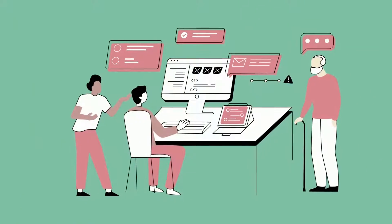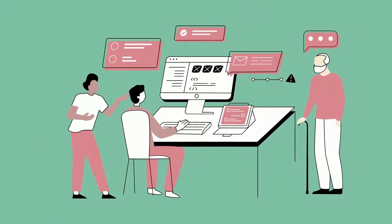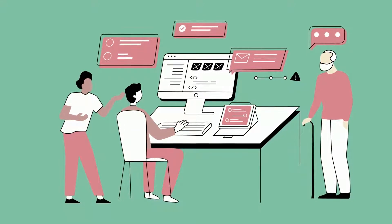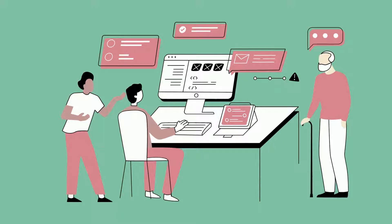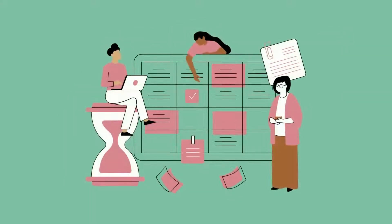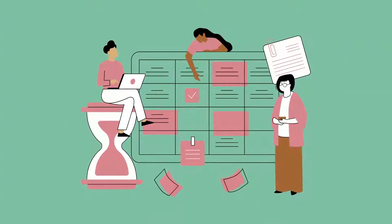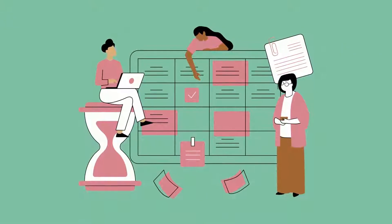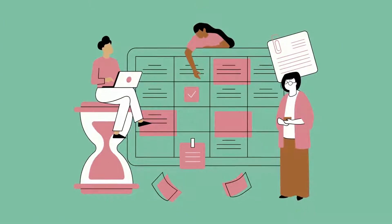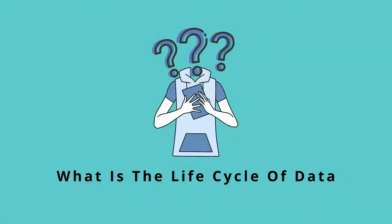Within an organization, the same body of data passes through many hands and informs decisions across multiple departments, which makes data a living thing that flows throughout information systems. It is the duty of data managers and data workers to manage the health of this data across the data life cycle. But what is the life cycle of data?